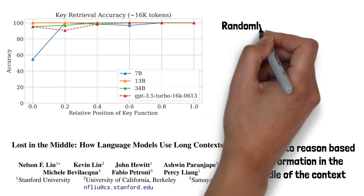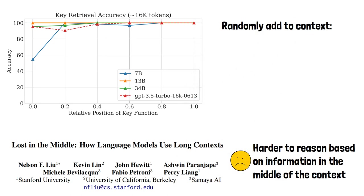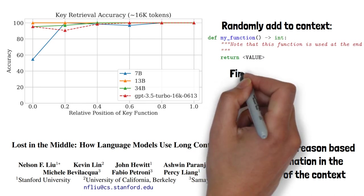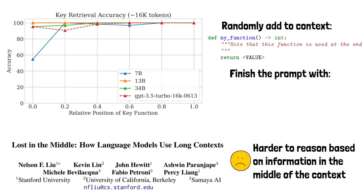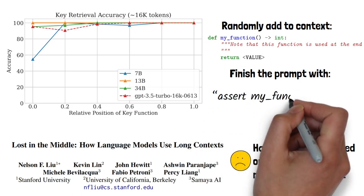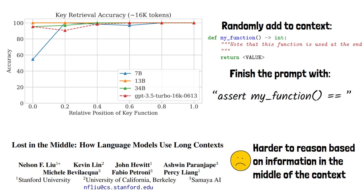The way they test this is by randomly adding to a code context the following simple function that returns an integer, where the value is a random number, and the prompt ends with an assert statement that checks the value returned from that function. We then measure the accuracy of the model yielding the correct value.